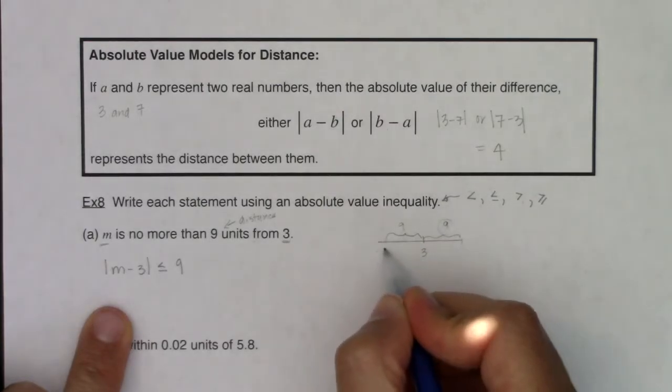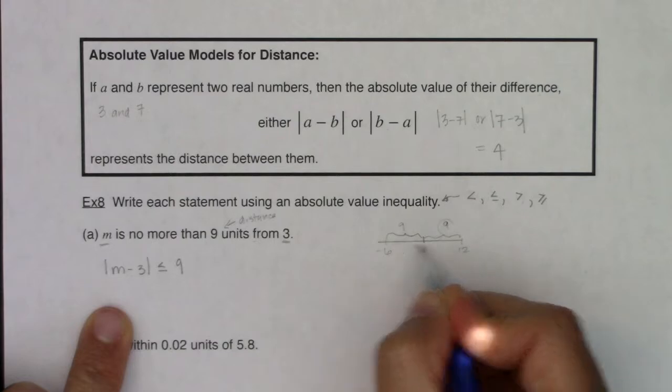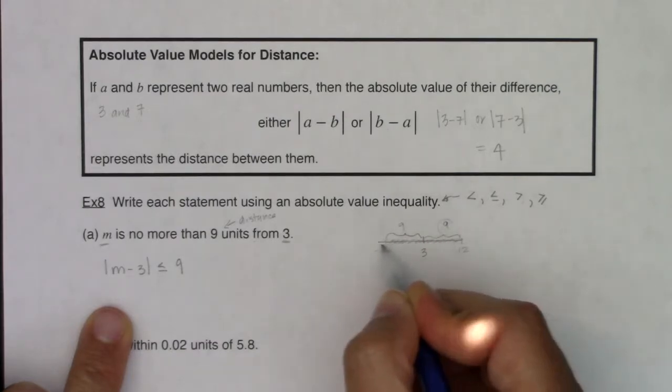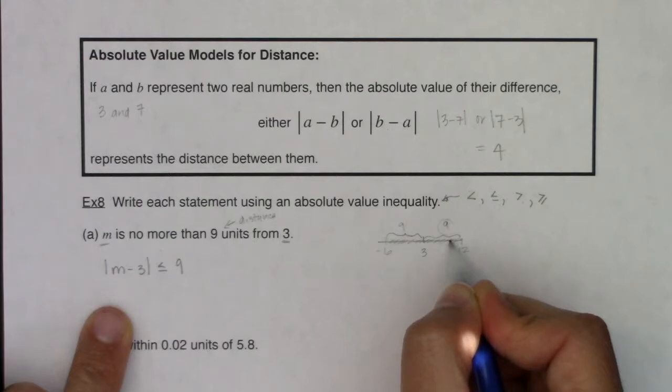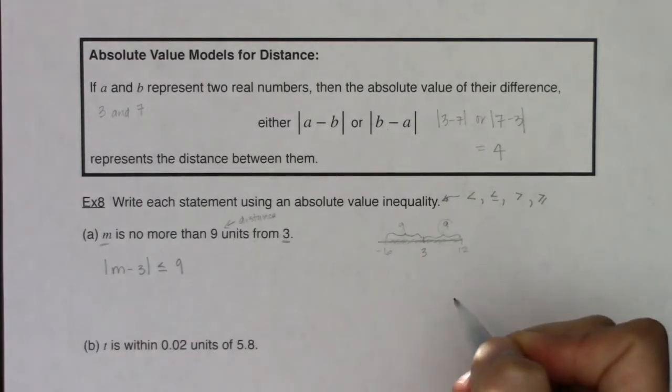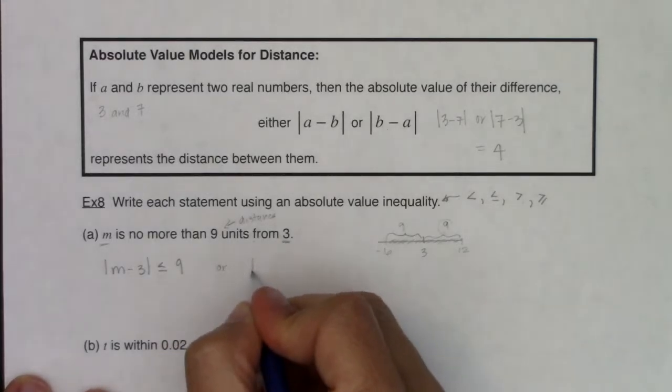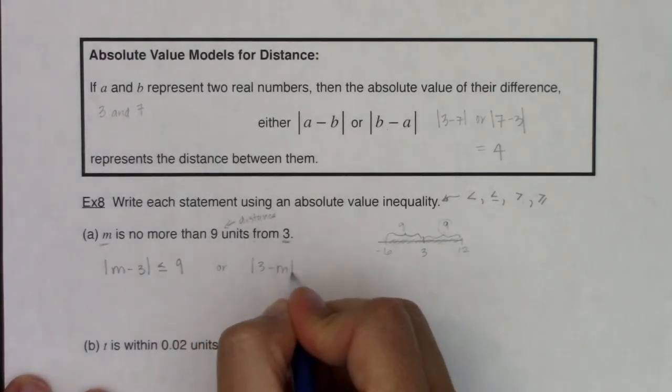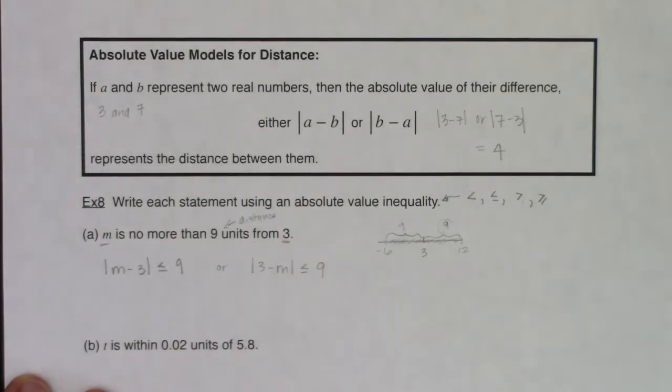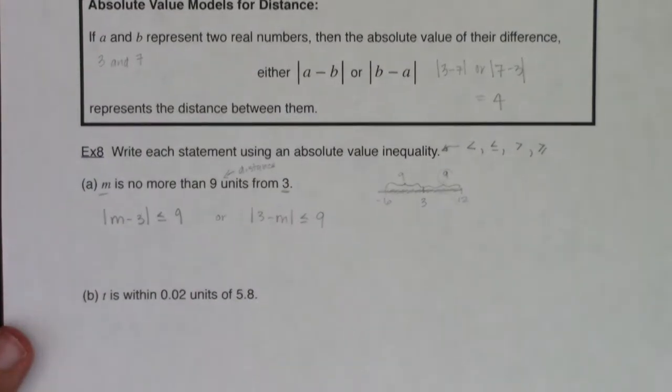In terms of no more than nine, that means that they should be less than or equal to 9. Any numbers that are in this band, and we could actually figure this out, this is negative 6 to 12. Any of these numbers could be m. Any number in here, its distance between that number and 3 is no more than nine. Now you could also write this the other way. I just think it's a little less intuitive to say 3 minus m is less than or equal to 9. So let me move this up so we can keep on practicing these.